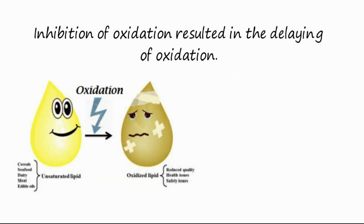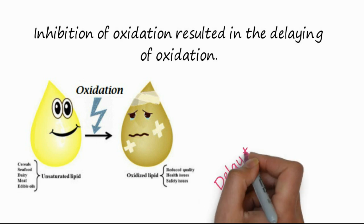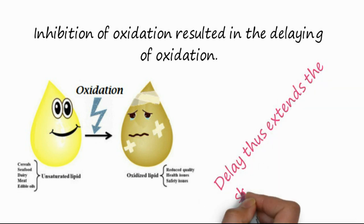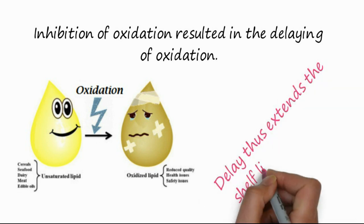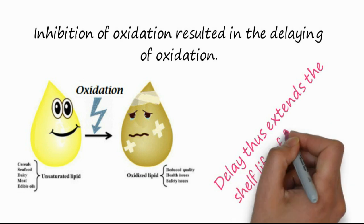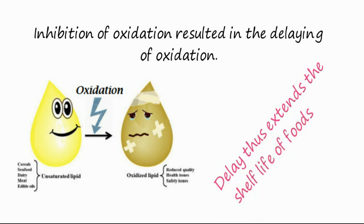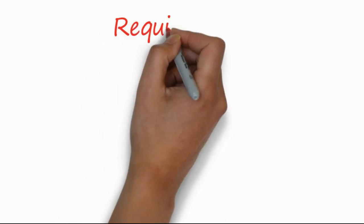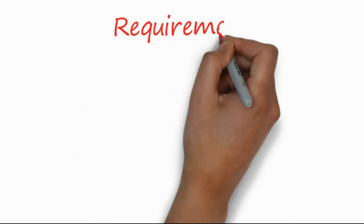You can see here the different types of lipids or unsaturated fatty acids present in cereals, seafood, dairy, meats, edible oils, etc. After their oxidation, their quality is reduced, so when we delay this oxidation we enhance the shelf life of the food.